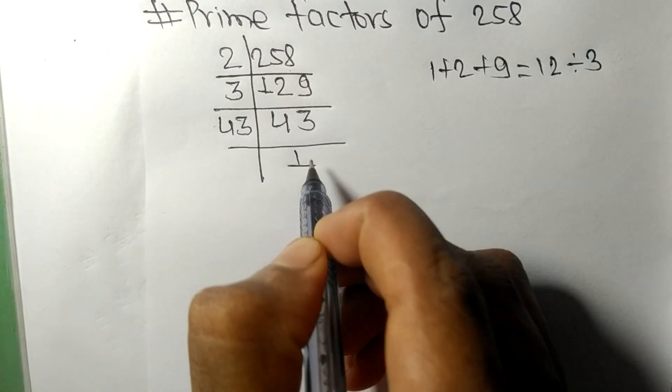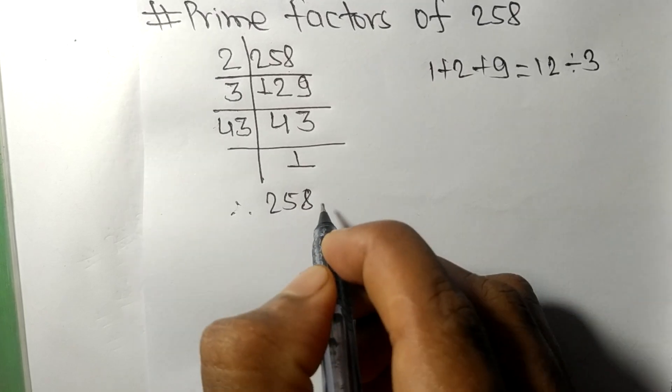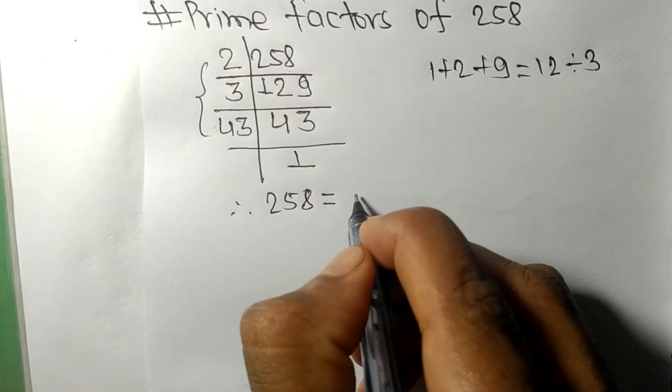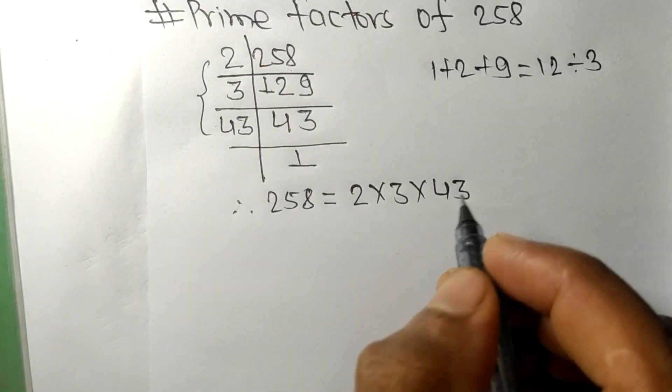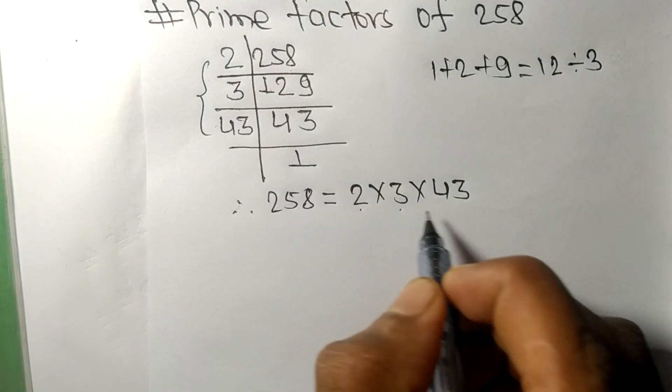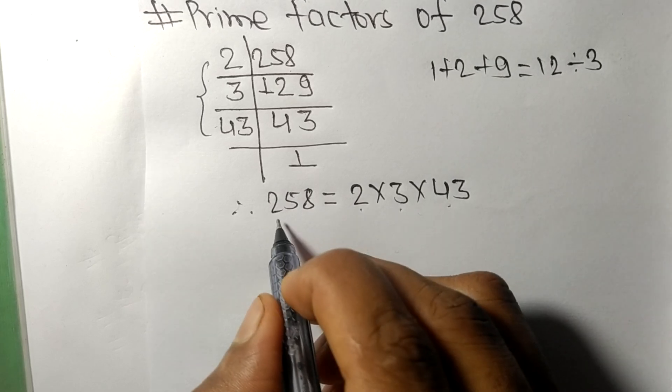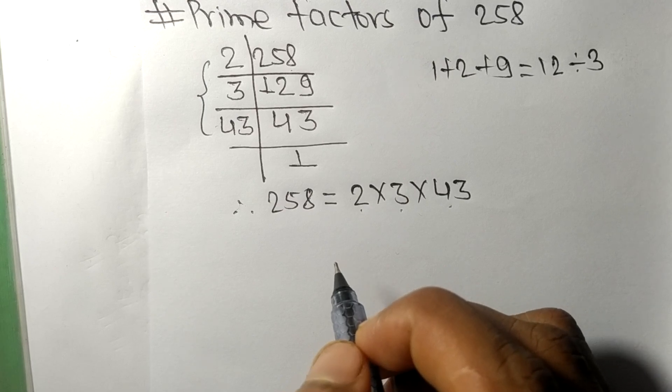we get 1. Therefore, 258 equals 2 times 3 times 43. So 2, 3, and 43 are the prime factors of 258. That's all for today, and thanks for watching.